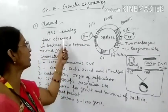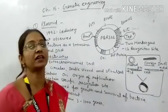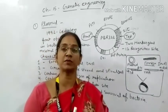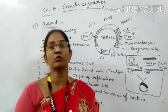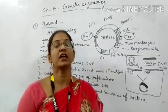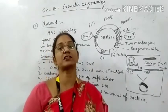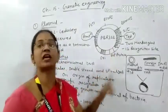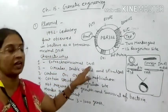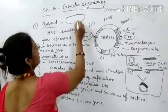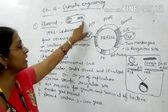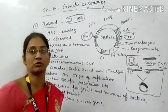Plasmid was observed in 1952 in bacterial cells in the extra-chromosomal form. Extra-chromosomal means you should understand properly — the bacteria cell has a chromosome, and the plasmid is separate from it. This is the original chromosome and this is the plasmid. The plasmid is extra-chromosomal DNA present in the bacterial cell.